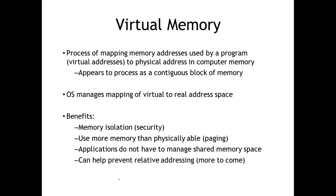Programs used to need a contiguous block of physical space, which was very limiting and challenging because you wouldn't always have all the space available for that process. Virtual memory solves that. Memory isolation is another benefit — when a program runs, it should only have access to the virtual memory space assigned to it, and it can't jump to other processes or places in memory without causing an error. You've probably run across that when you got a segmentation fault in C — you tried to access a place in memory you didn't have permission to.